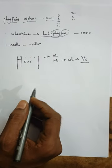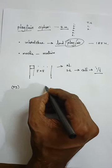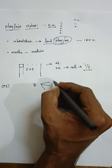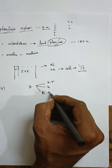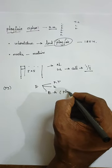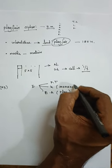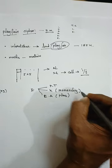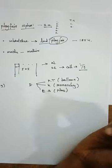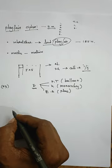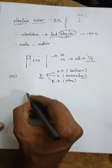Let me check an example so you can easily understand what it is. If you want to do encryption, we need three ingredients: one is plaintext, the second one is a key, and the third one is an encryption algorithm. The encryption algorithm here is the Playfair cipher. The key we are going to take is 'MONARCHY' and the plaintext will be 'BALLOON'. Now we're going to perform the encryption operation. The first step is to generate the five-by-five key matrix.